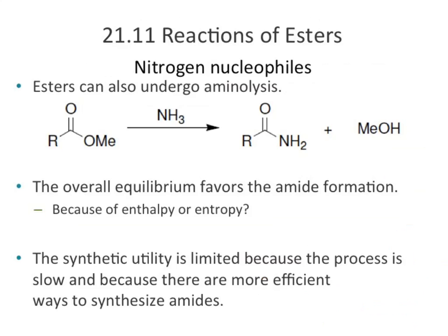Amide formation from carboxylic acids is relatively slow, so if we actually want to form an amide efficiently, we'd use a better electrophile — starting with acyl chlorides or anhydrides instead.